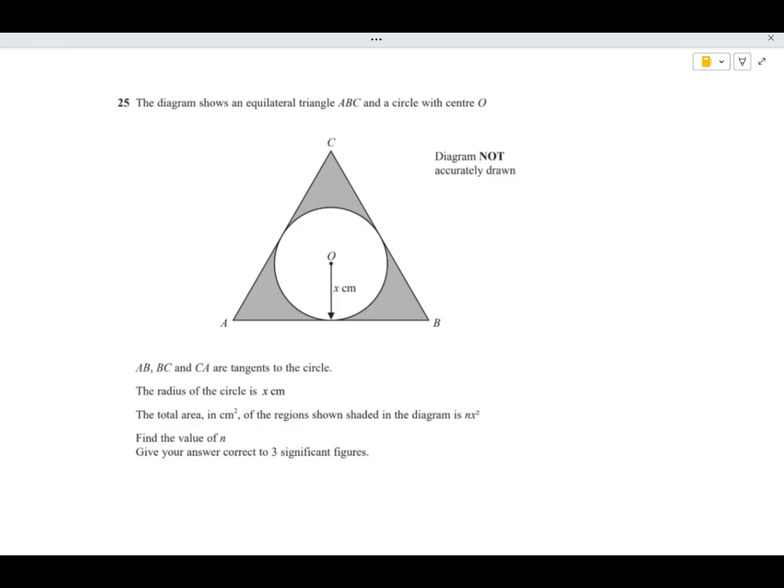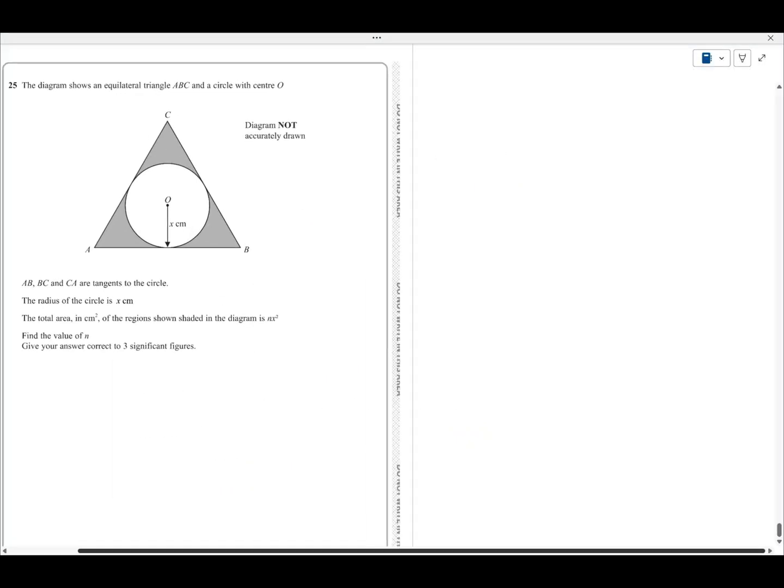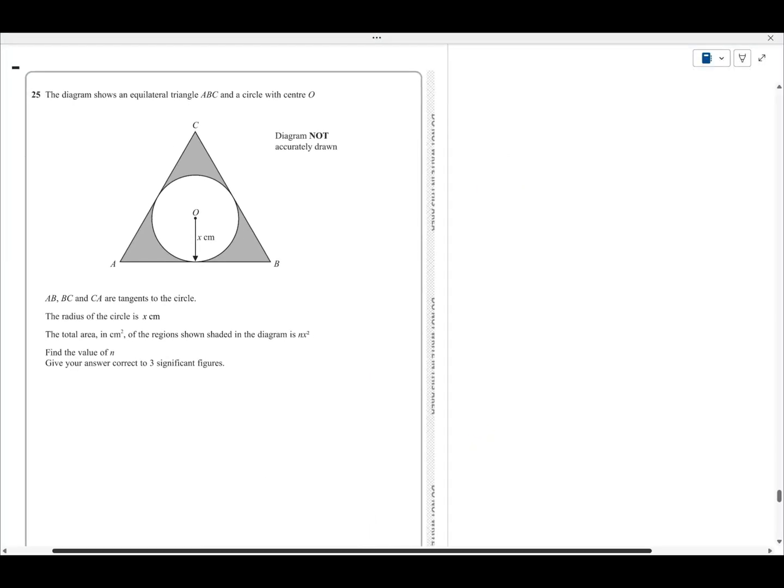Right, let's get on with this one. Okay, question 25. The diagram shows an equilateral triangle ABC and a circle with centre O.